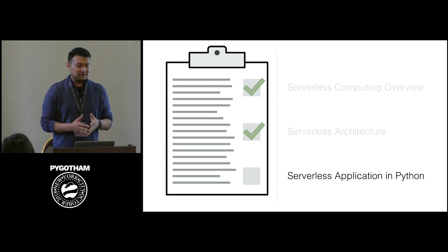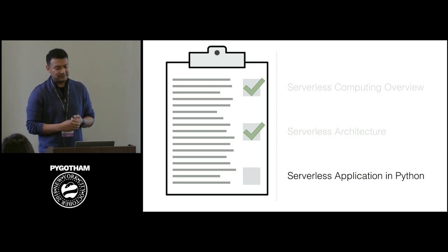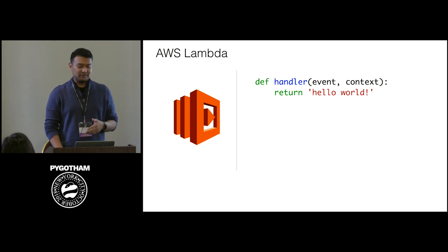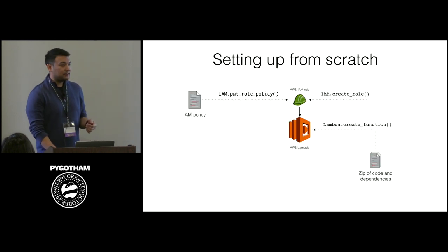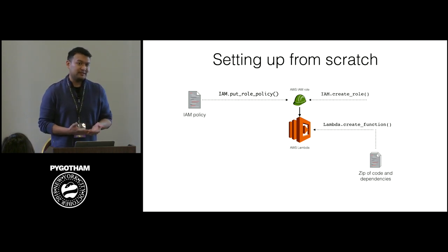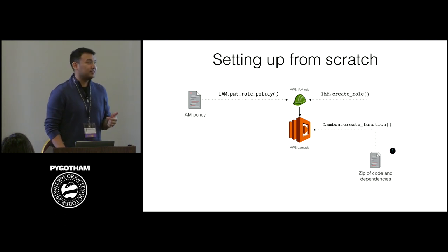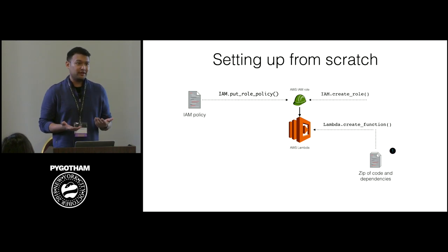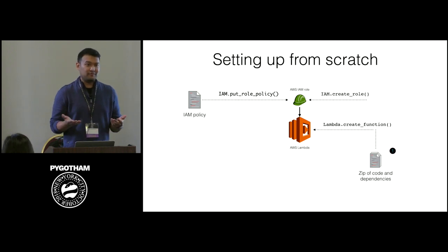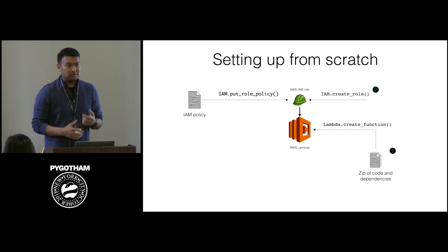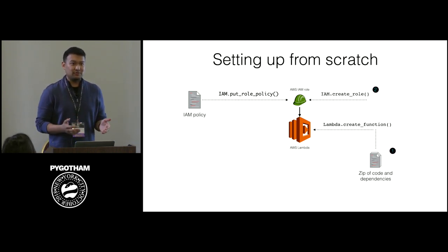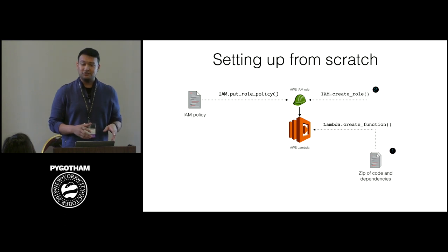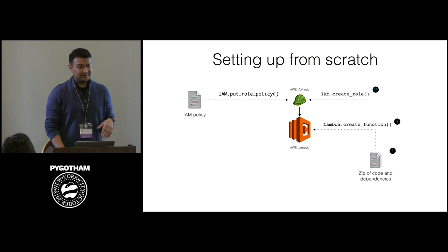Now let's actually write these serverless applications in Python and look at the specifics of setup. There are a couple of concepts to keep in mind. First, we need to figure out how to package our code and dependencies — for example, Pillow for image processing or Boto3. Second, we need to configure permissions, because by default your Lambda function doesn't have access to anything — you have to explicitly say what it's allowed to do using IAM roles. And then finally, once that's done, we can create our function.